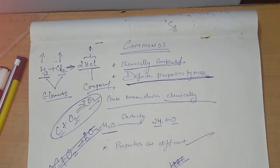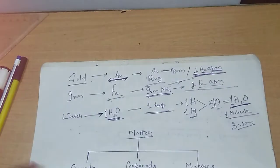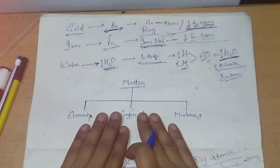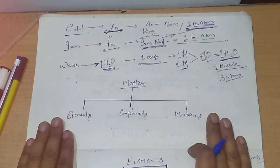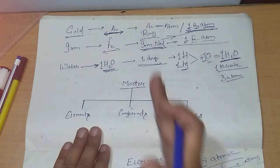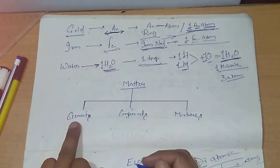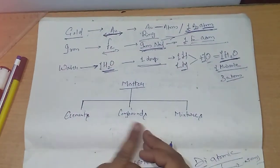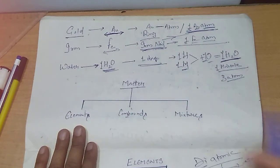Tomorrow we will discuss mixtures, and then we will understand what is the difference between the three bifurcations of matter — elements, compounds, and mixtures. Today we are clear on what elements are and what compounds are. Thank you.